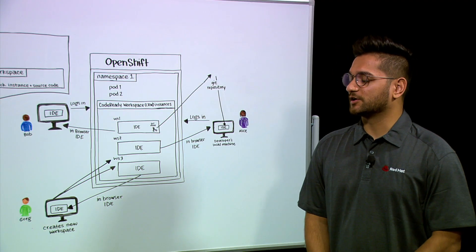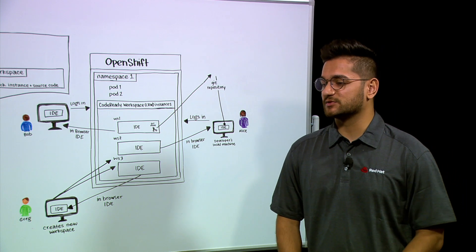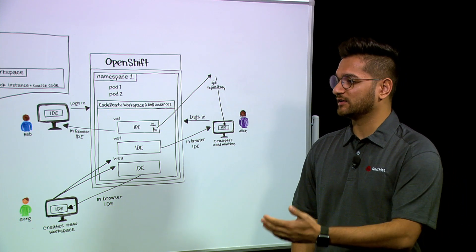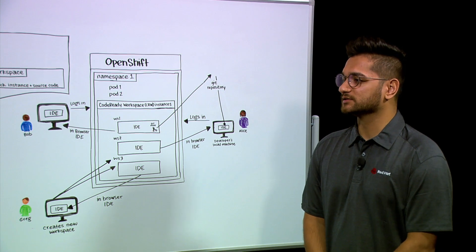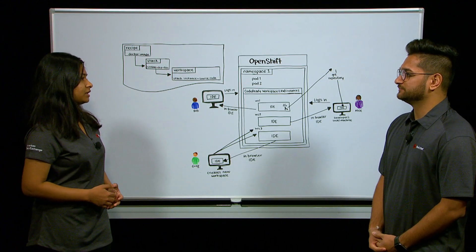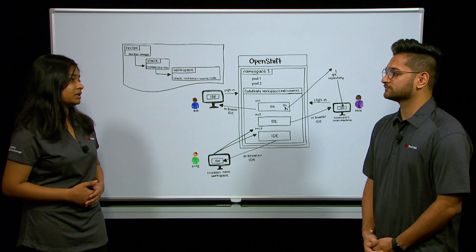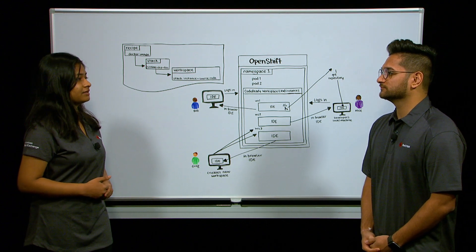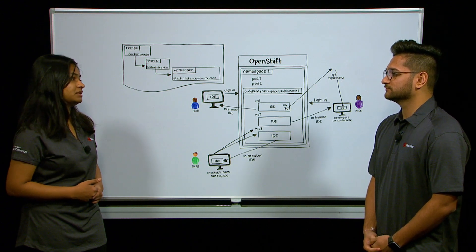Oftentimes when we're working with clients with large teams working on complex applications, we see issues where it works and builds on one developer's machine, but it doesn't on another. How can we solve this? The solution would be a centralized application development environment which each team member can access, so everybody has the shared runtime libraries, tools, and dependencies.